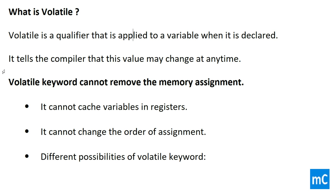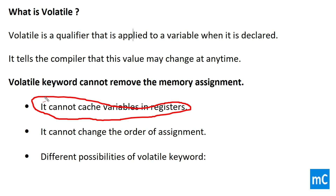The volatile keyword cannot remove the memory assignment. It cannot cache a variable in registers — this is one of the important points. It cannot change the order of assignment. These are the key properties of the volatile keyword.